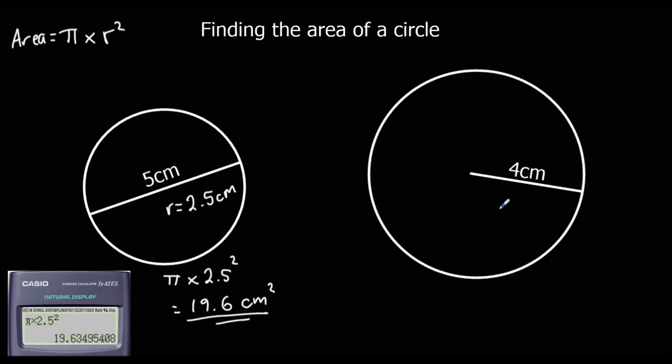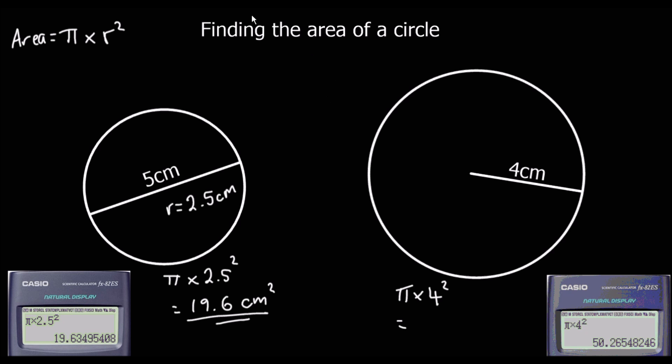Here we've got the radius already, it's 4, so we're going to do pi times 4 squared. When we type that in the calculator, we get 50.3 to one decimal place. 50.3 centimeters squared, and both of these answers to one decimal place.